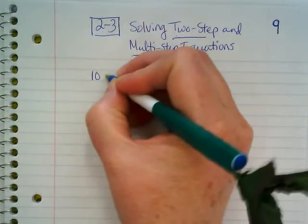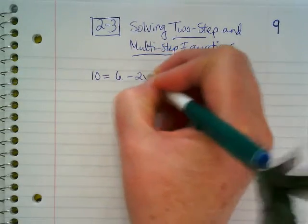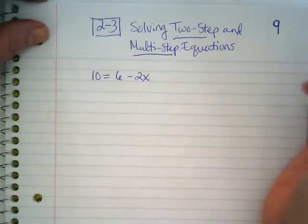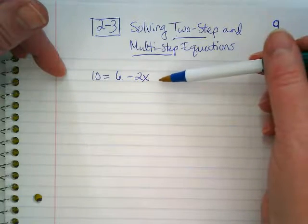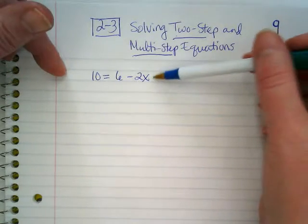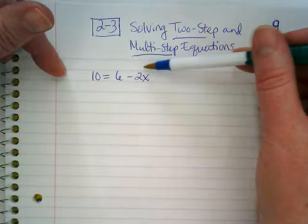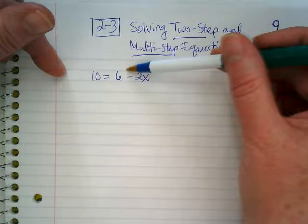We're going to start off with this relatively simple example of 10 is equal to 6 minus 2x. So when you look at this problem, you want to identify where the variable is, but the variable number, the number that's with the variable, what we call the coefficient, it's going to stay there for the first step. We're going to address the other number.